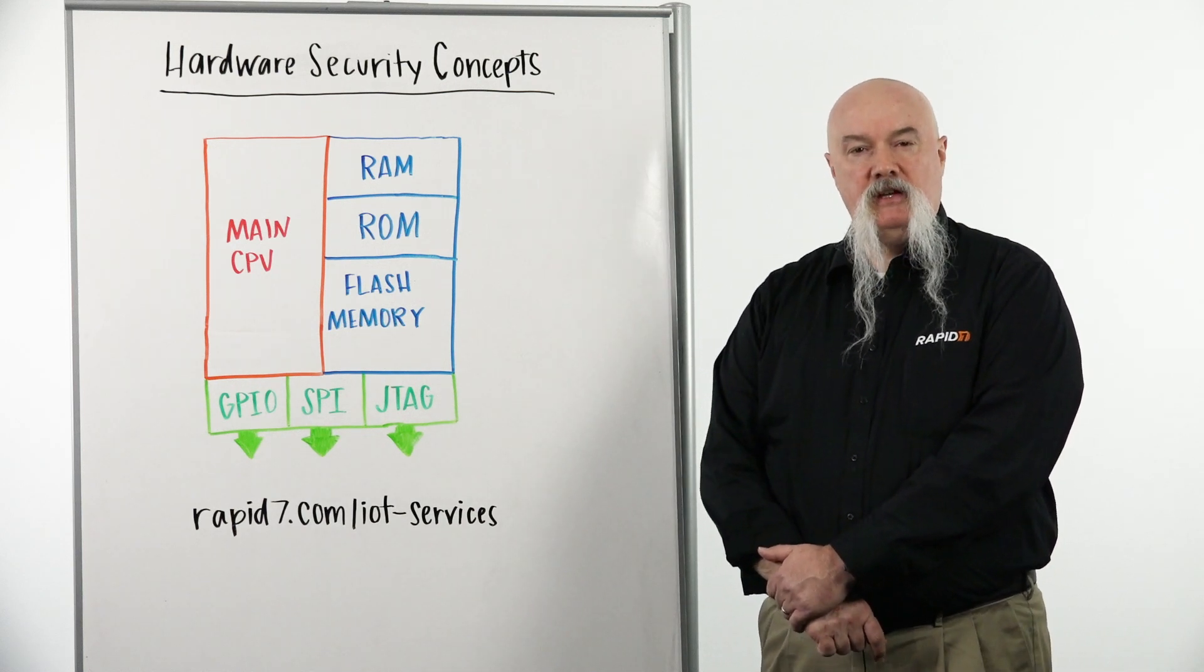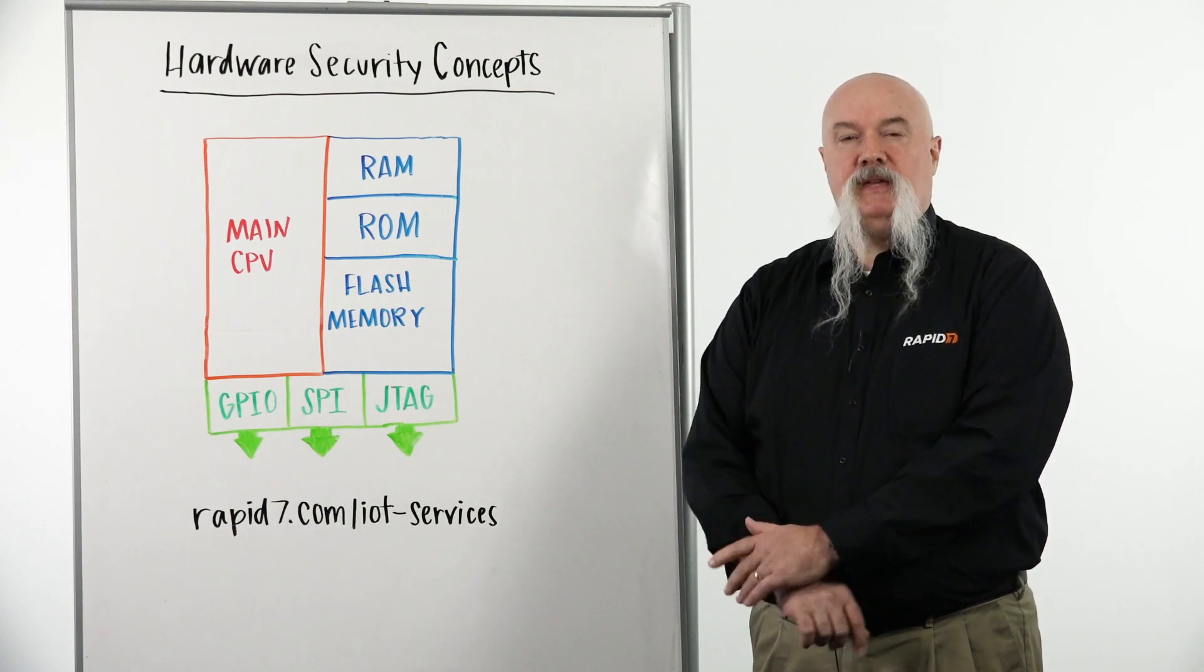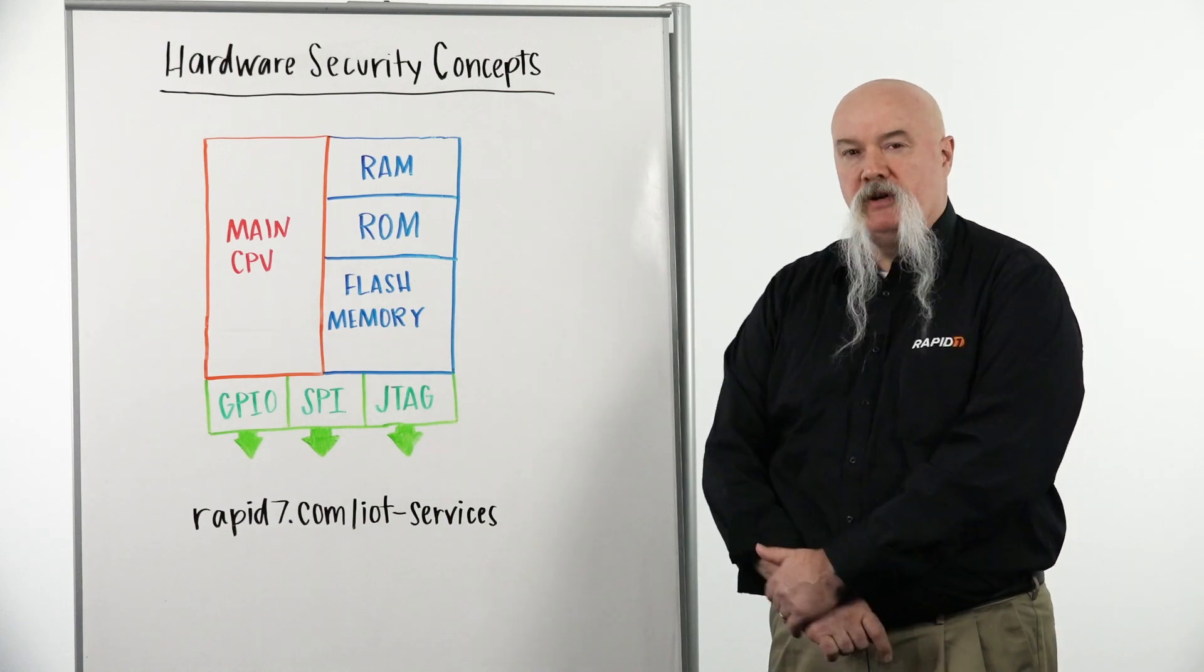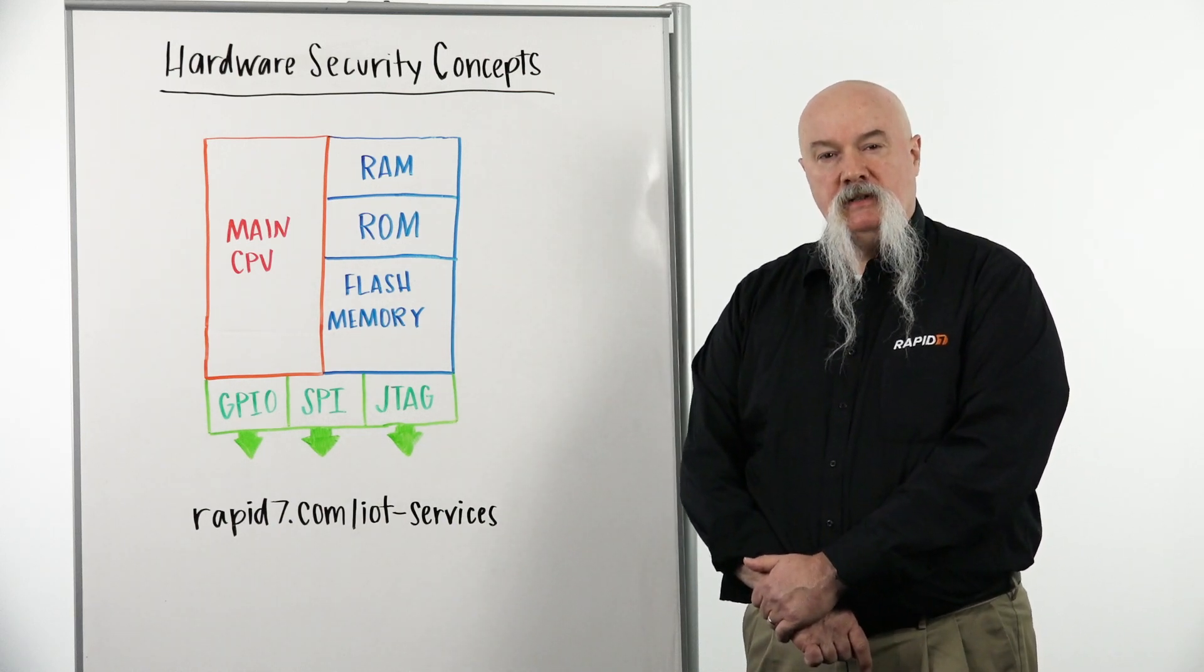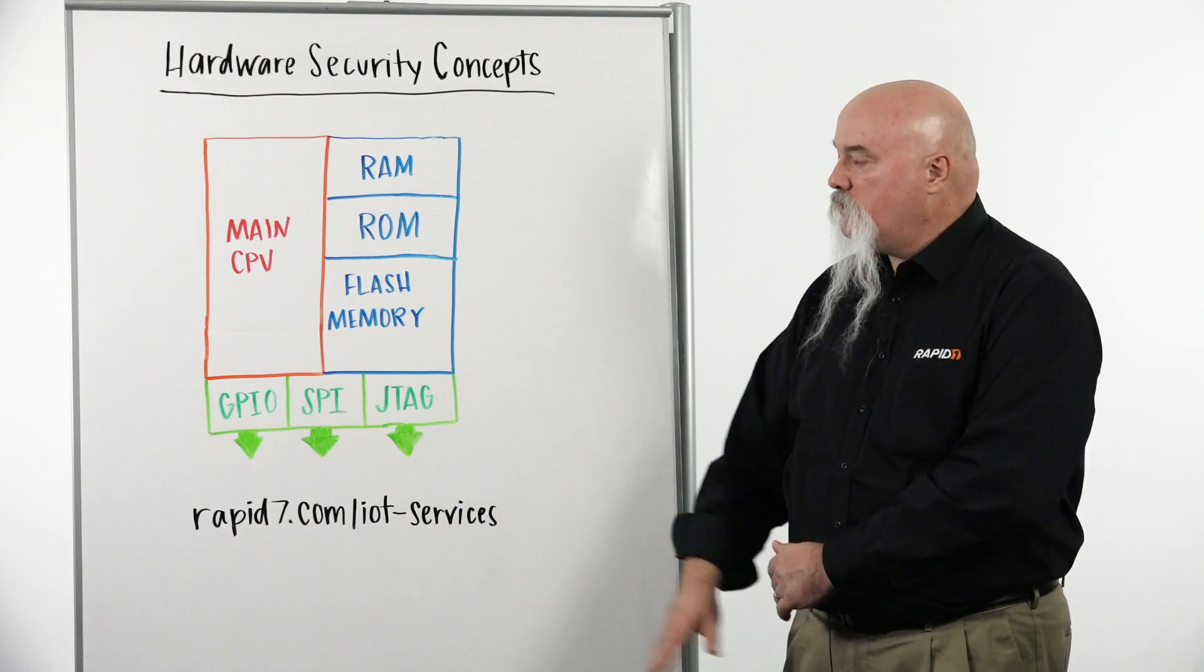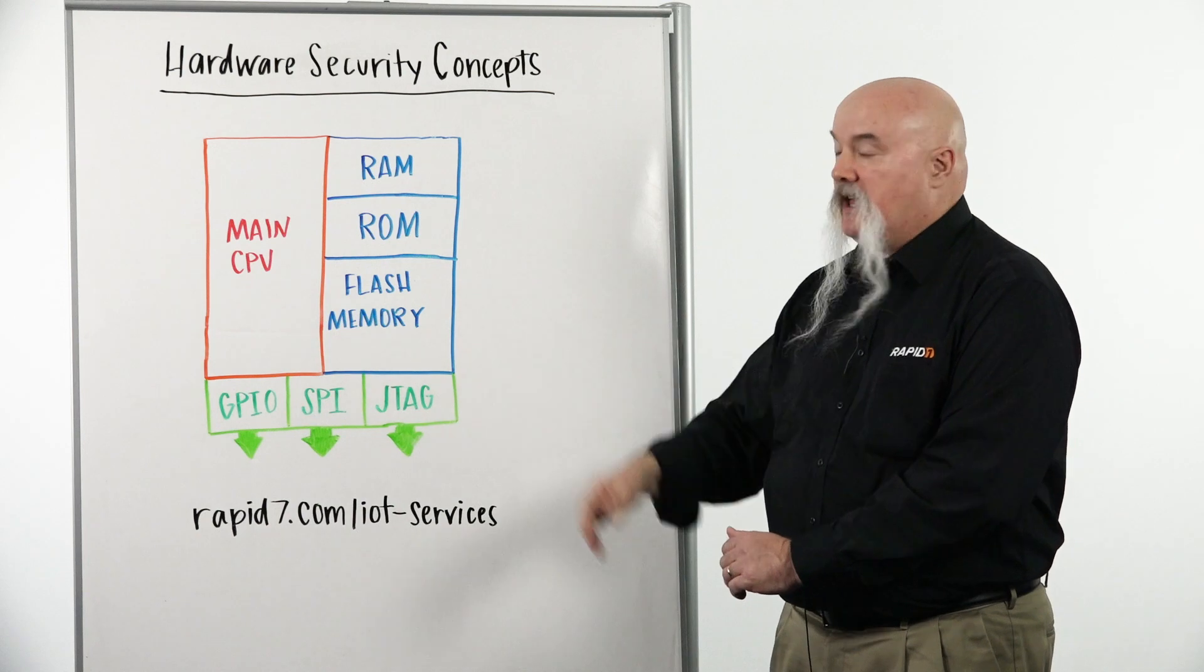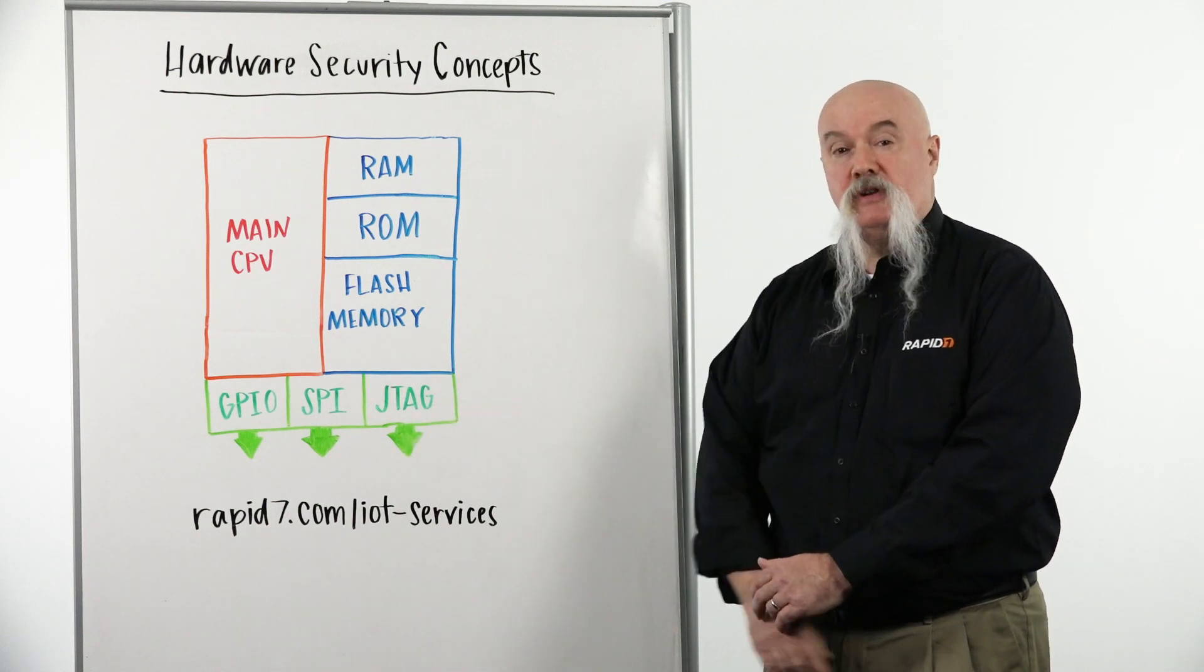So what I'm going to be dealing with here is a couple key pieces. One is how do we protect flash memory in processors. And also we're going to be talking about how do we protect access into that processor and the flash memory from various other entry points.